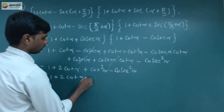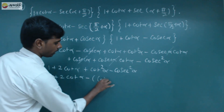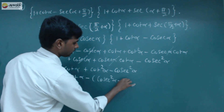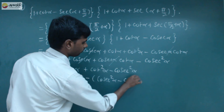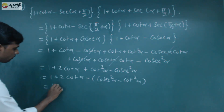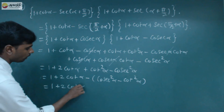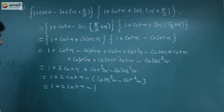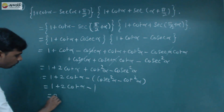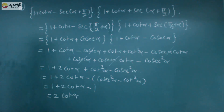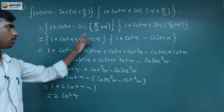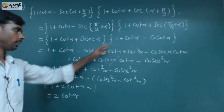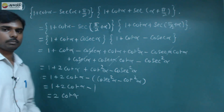We're going to rearrange. So minus of cosecant squared alpha minus cot squared alpha equals 1. So that becomes 1 plus 2 cot alpha minus 1. So 1 minus 1 is 0. That's equal to 2 cot alpha. So the result equals 2 cot alpha. Thank you.